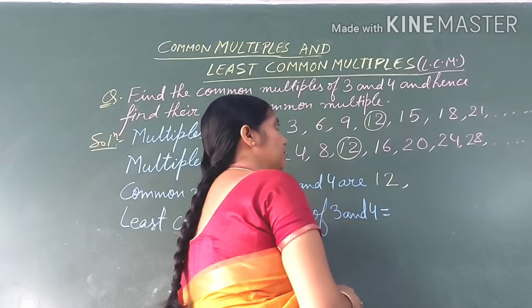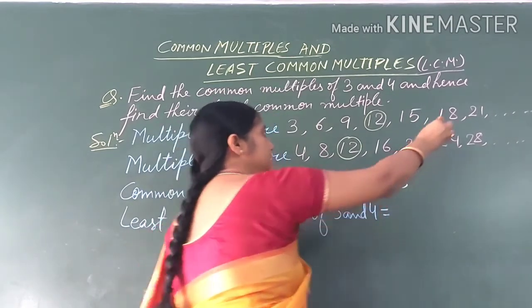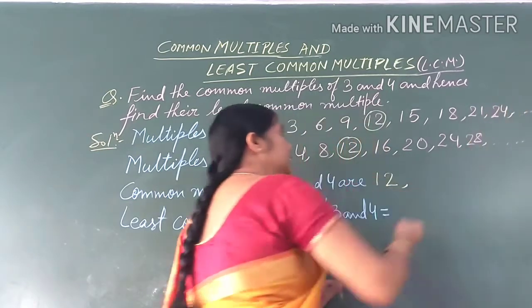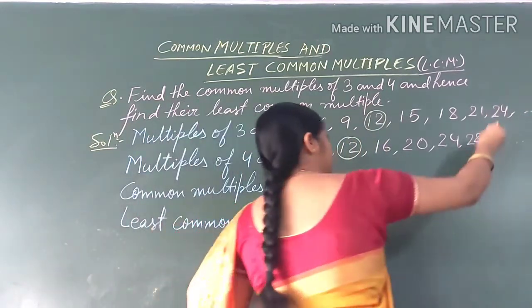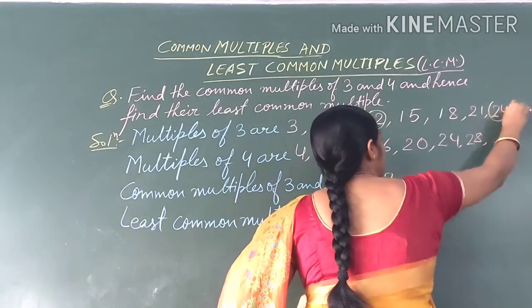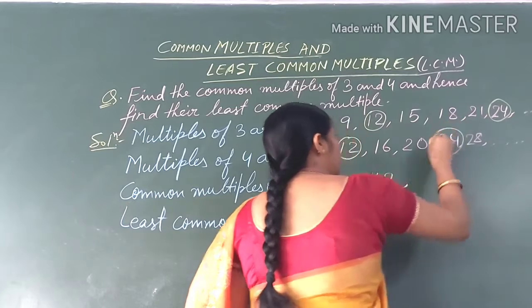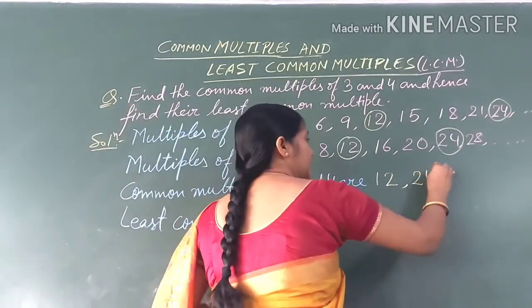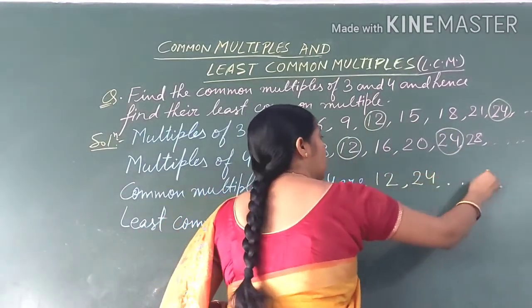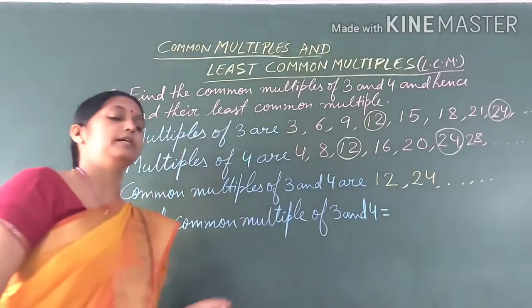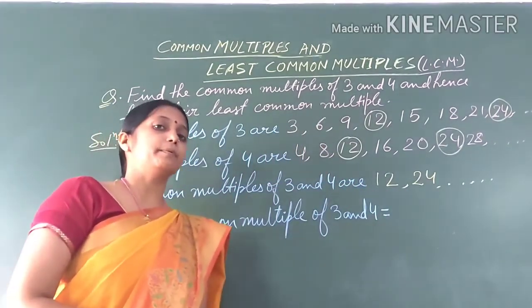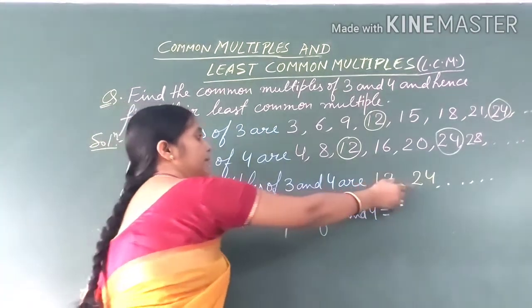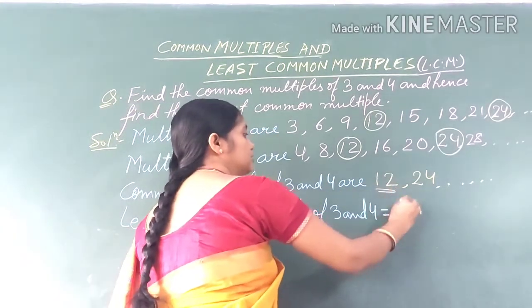When we move on, we find the same value again at 24. So the common multiples we found are 12 and 24. These are two common multiples of 3 and 4, and we can get more common multiples continuing this way.